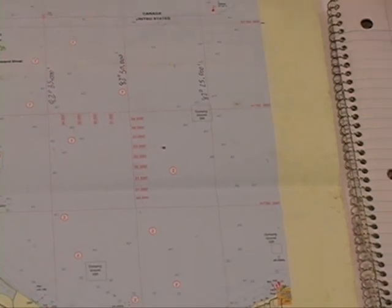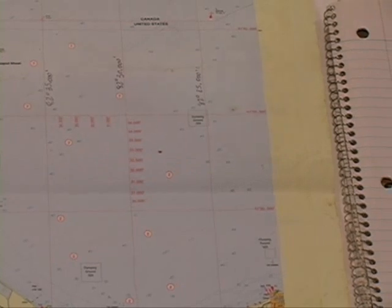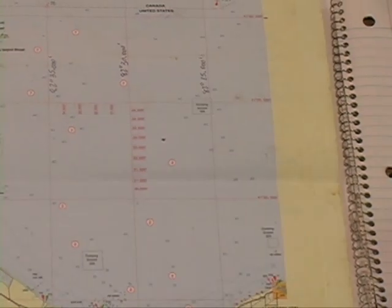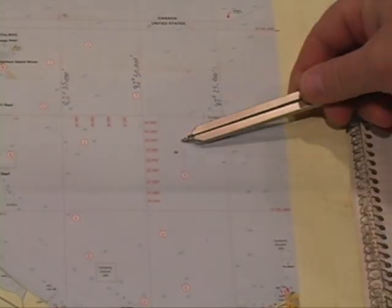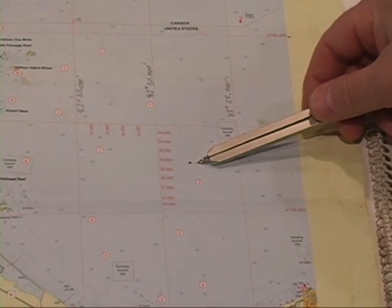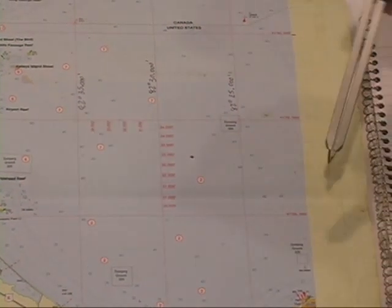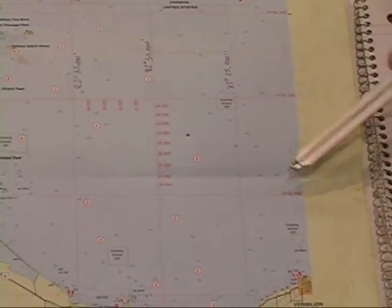Now remember our waypoints are always listed in latitude and longitude so I'm going to determine the latitude first and the way we do this is very simple. We have to determine how far this unknown point is from a known point and on this map we have our latitude lines.